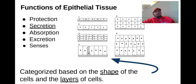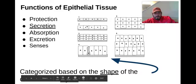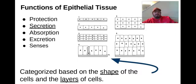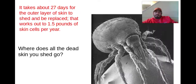Looking at these, some cells look kind of square or cube-shaped. Some look really tall, like pillars or columns. And you also see some that are one-layered and some that are multi-layered. We can categorize these based on shape and layers.